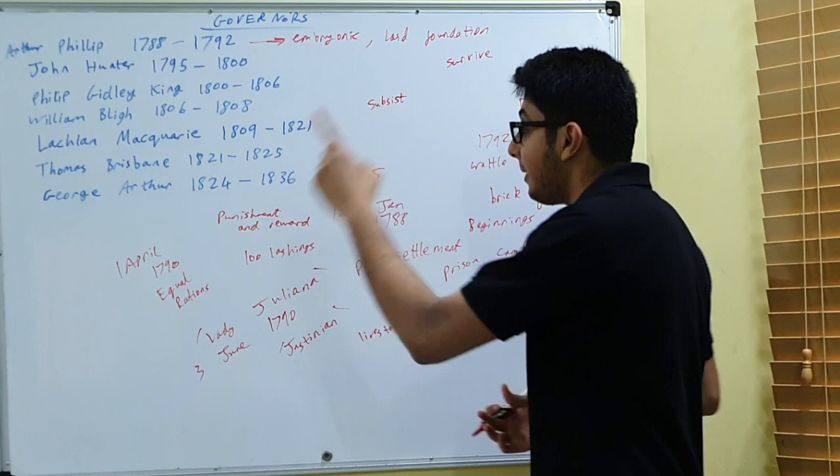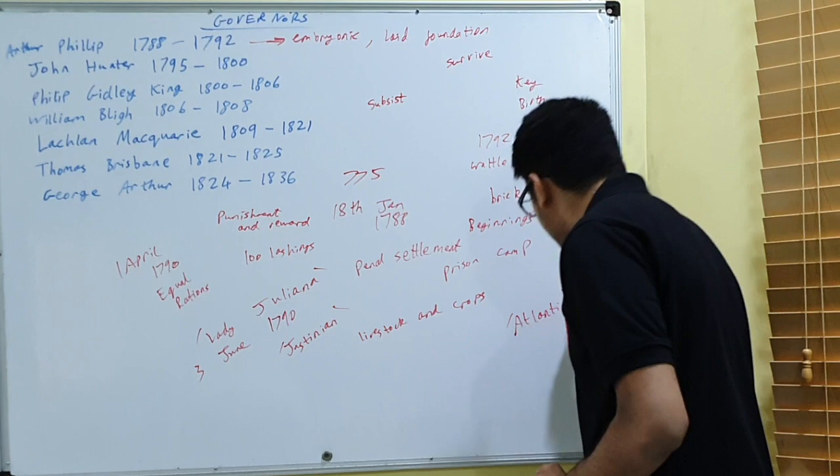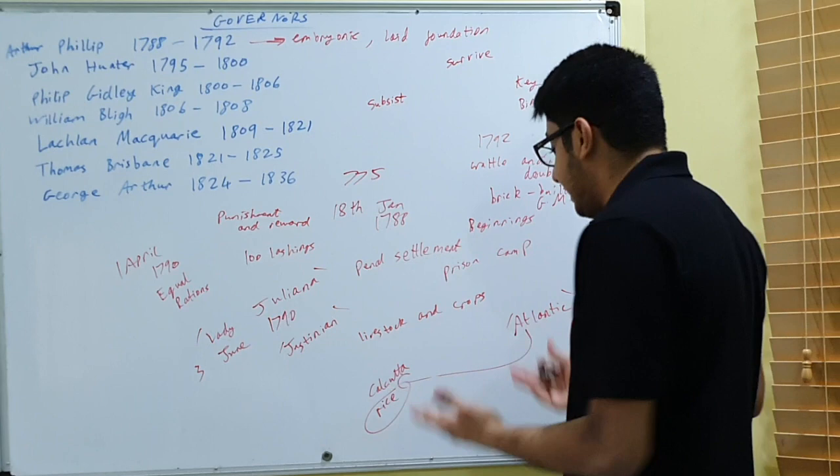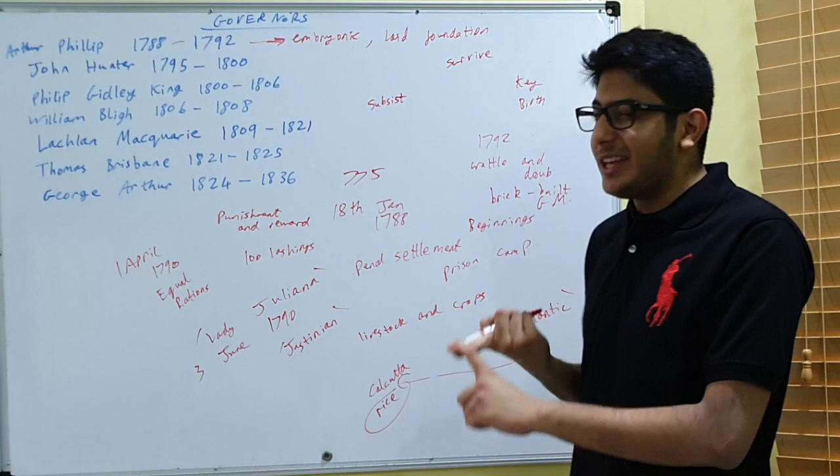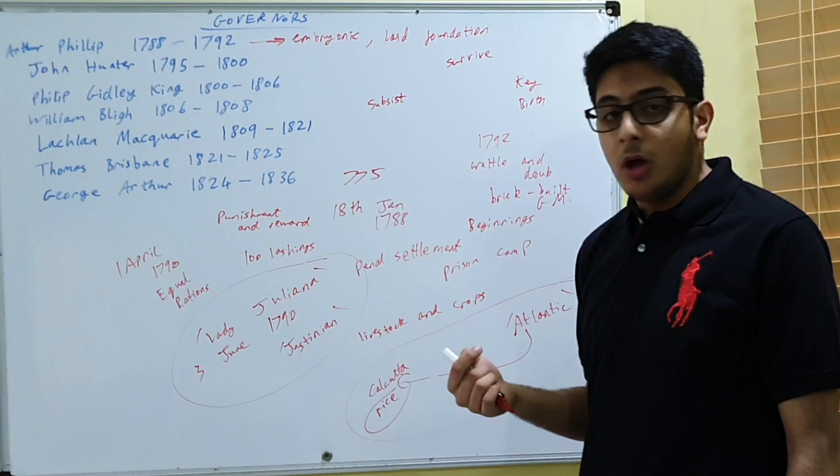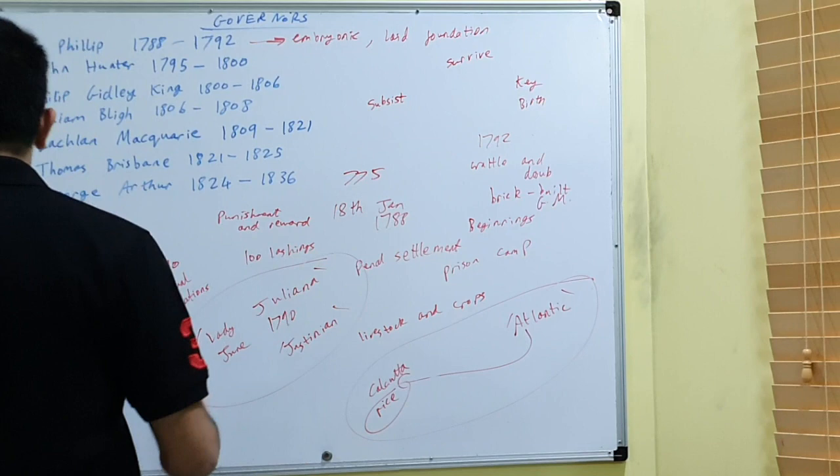Phillip was very smart, you see. He sent the Atlantic, a ship that was part of the third fleet, all the way to Calcutta in India to get some rice in order to survive, because clearly there were food shortages. The amount of livestock they had depleted within six months of arrival, so they really needed the second fleet, and Phillip's decision to send the Atlantic to Calcutta for rice was vital.